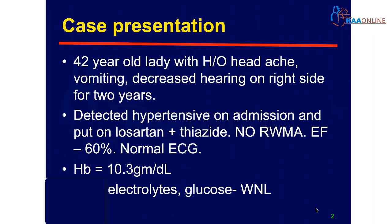This is how a patient would typically present: a 42-year-old lady with history of headache, vomiting, and decreased hearing on the right side for two years, detected hypertensive on admission and put on Losartan. On echocardiography there were no regional wall motion abnormality and the ejection fraction was around 60 percent, the ECG was normal. Hemoglobin, electrolytes and glucose were within normal limits.